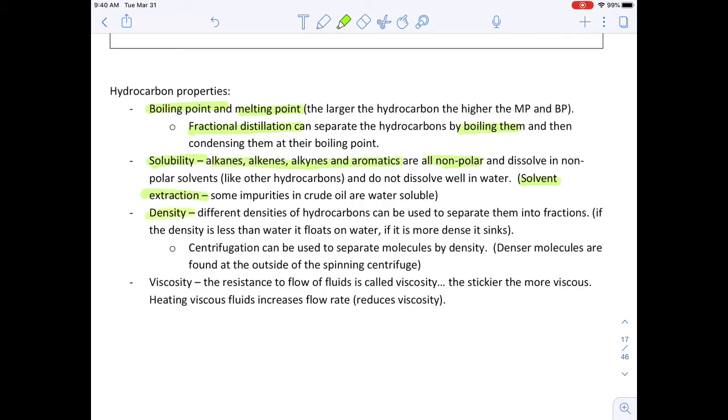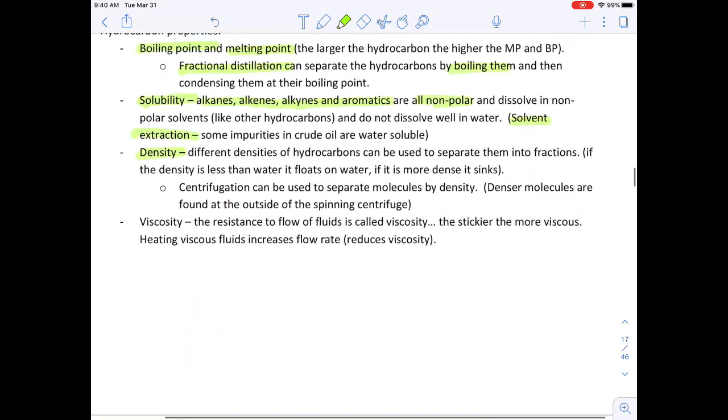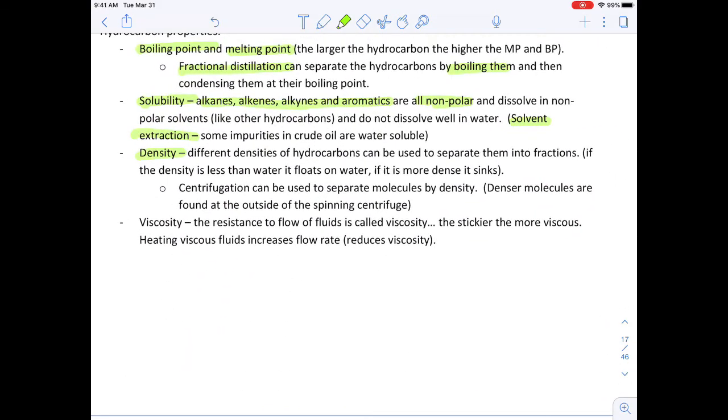Density can be used. For instance, when they're separating the oil from the sand, the sand is much more dense than the oil itself. If they heat it up, they can exploit the difference in density of the two materials using centrifugation, so they spin it and the more dense materials go to the outside. Sometimes they can even use things like viscosity or resistance to flow. The stickier or more viscous, the slower it flows, and you can sort of separate some things based on flow rate.